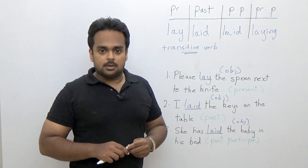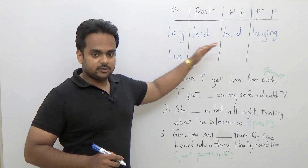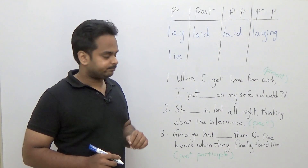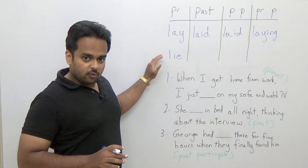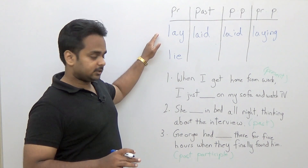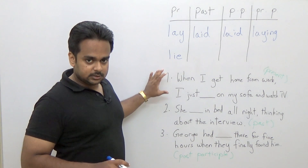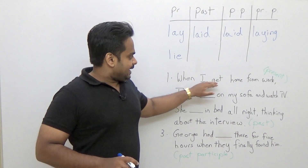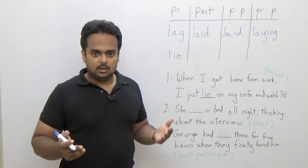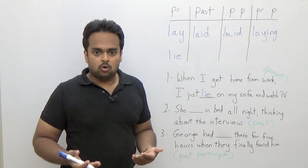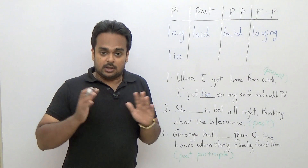Now let's look at the verb 'lie' and its verb forms. The present form of 'lie' is simple enough — just like 'lay', it's just 'lie'. Here's an example in the present simple tense: 'When I get home from work, I just lie on my sofa and watch TV.' This is something that happens every day — I get home, jump on my sofa, and I just lie there and watch TV.